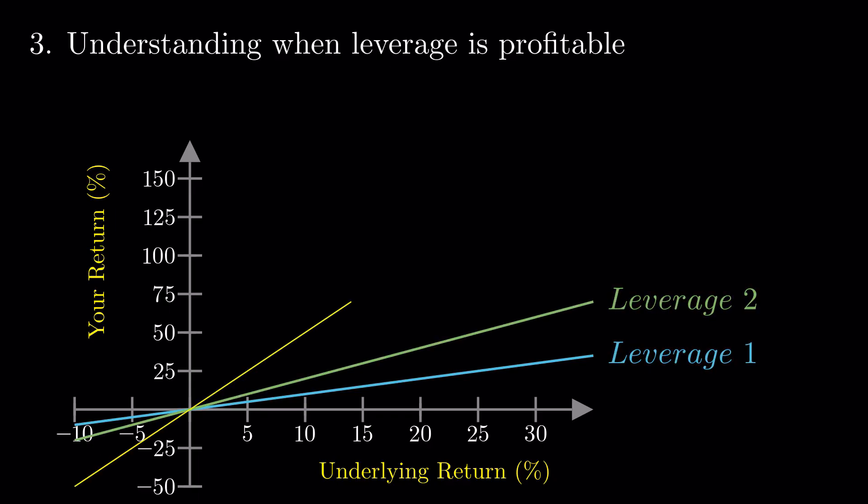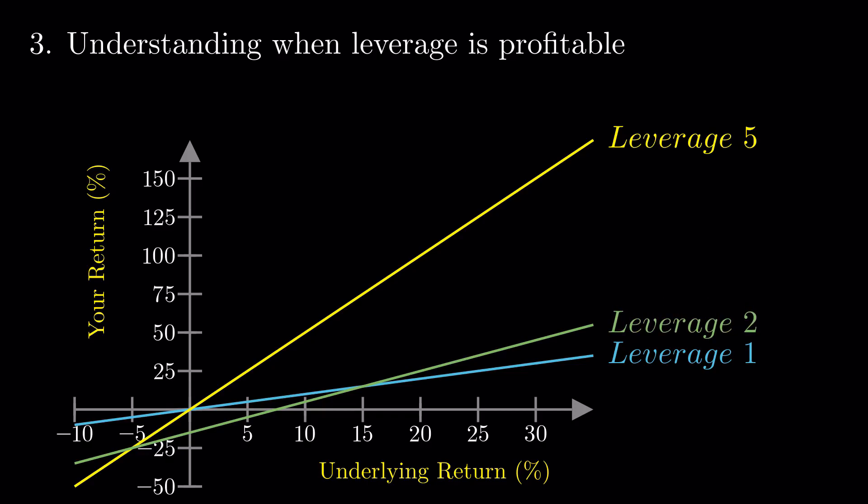Under the assumption that there are no costs, the situation is like this. Now, we update all three lines by subtracting from them the associated fees. Leverage 1, no fee. Leverage 2, 15%. And Leverage 5, 40%.